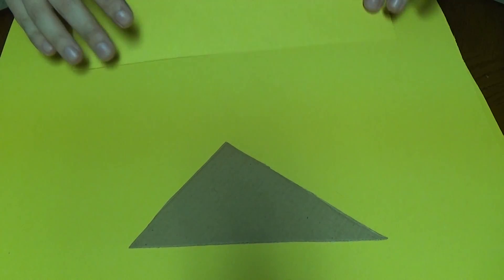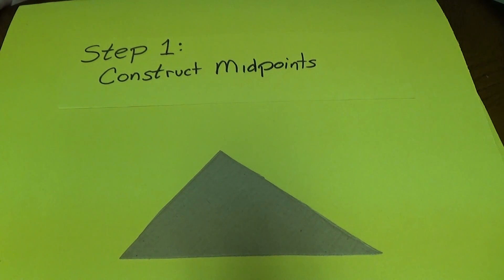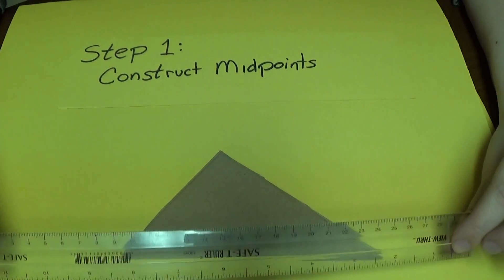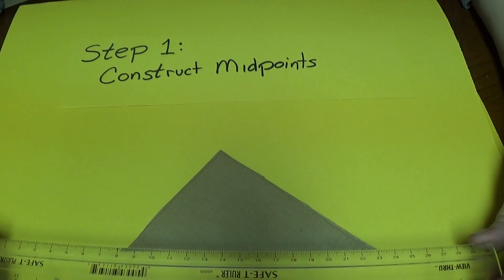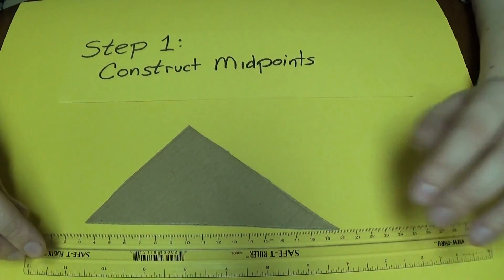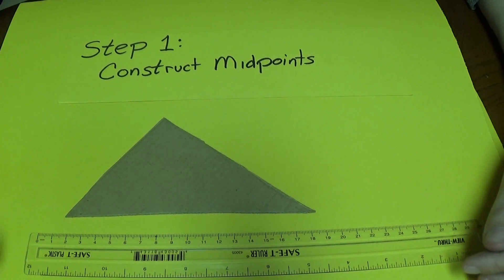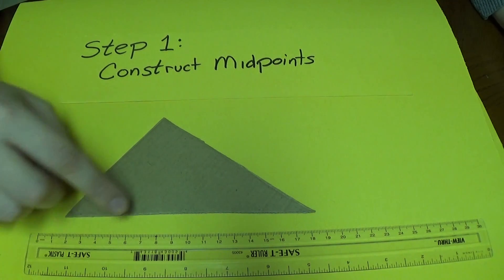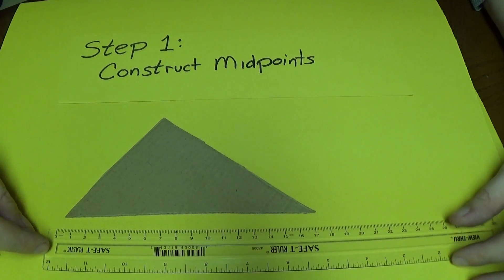The first thing that we need to do, we need to construct the midpoint of each side. So here I have my ruler and I'm going to be using the centimeter side. Because centimeters are a lot smaller than inches, so that makes it more accurate in our measuring. And also because it's easier to divide tenths of a centimeter than sixteenths of an inch. We're going to have to divide each of these numbers in half to find the midpoint.